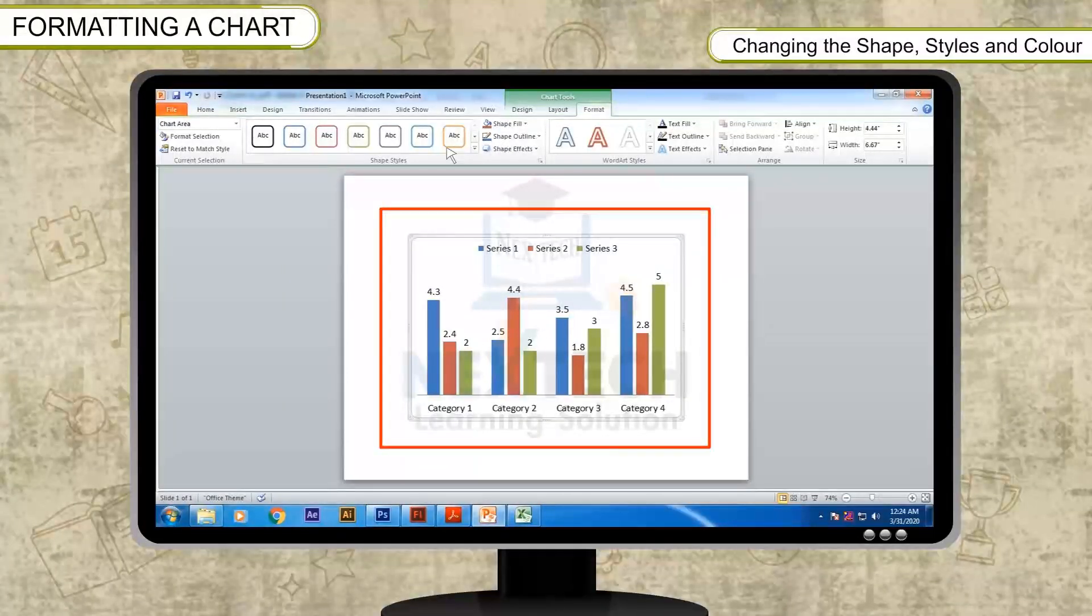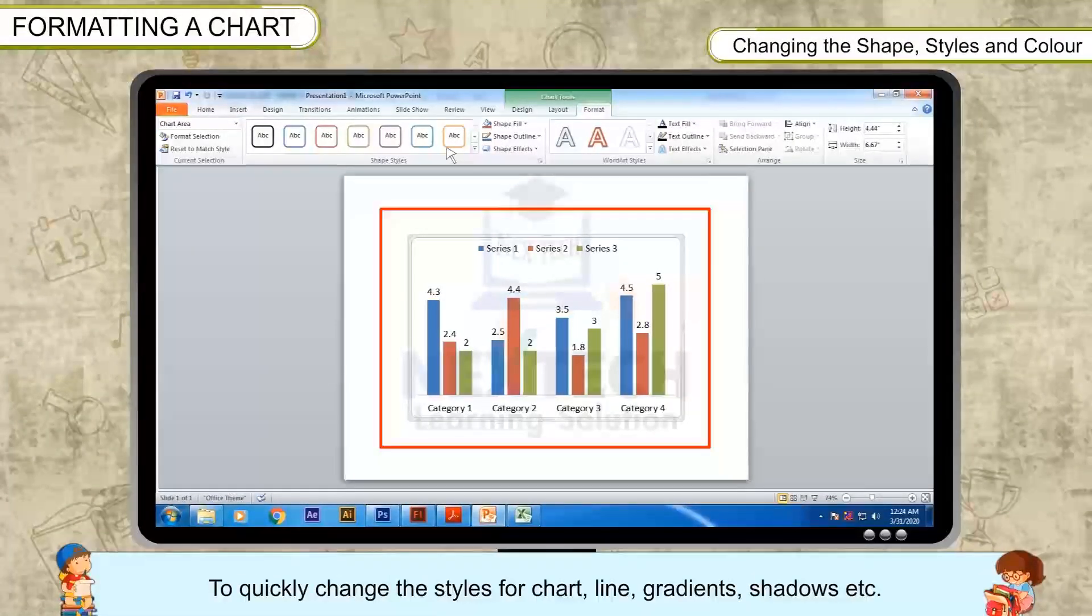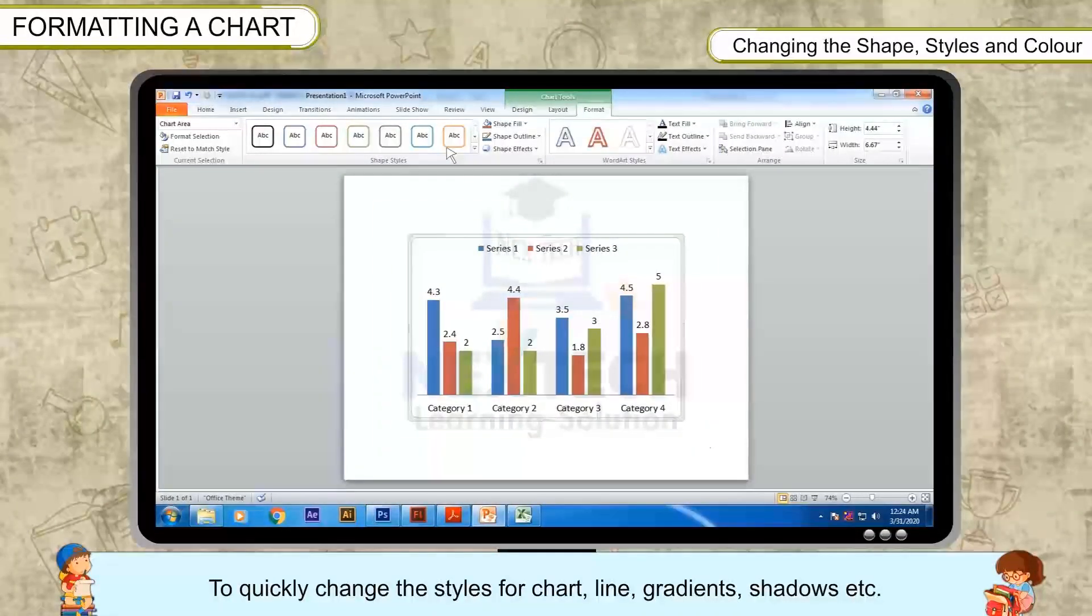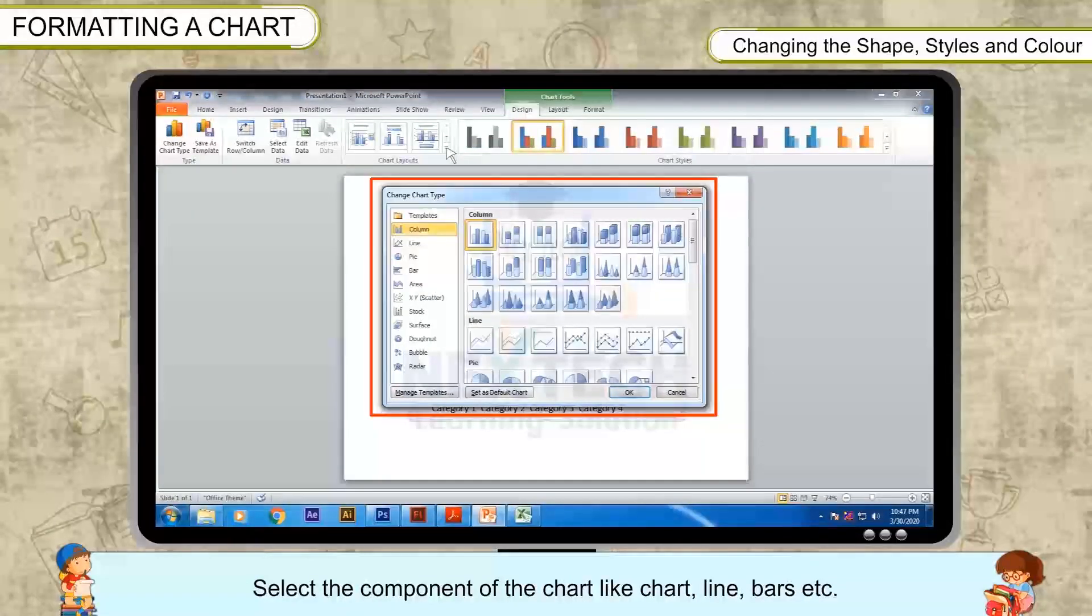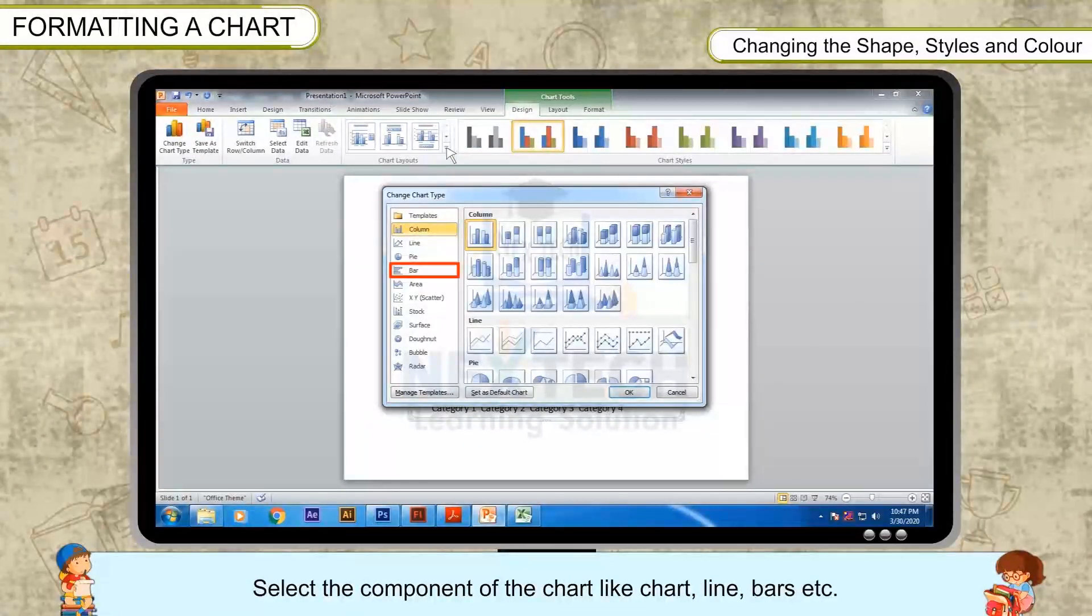Changing the shape, styles, and color. To quickly change the styles for chart, line, gradients, shadows, etc., select the component of the chart like Chart, Line, Bars, etc.